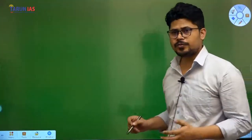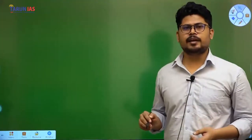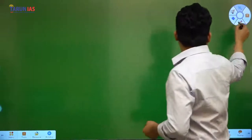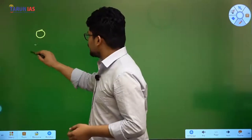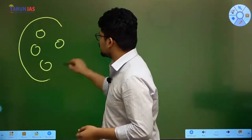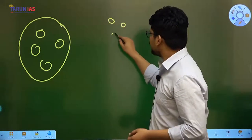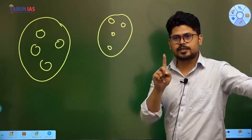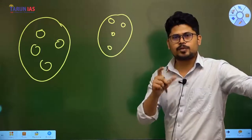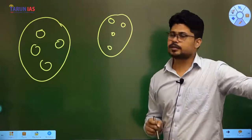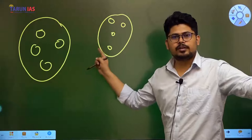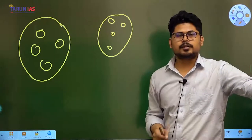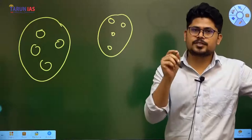In cluster development, similar kinds of entities are grouped into one cluster. This makes two things easy: first, differentiation, and second, group-making of similar things. By differentiation, we can assess what kind of different strategies are needed for different things, avoiding the danger of a 'one size fits all' approach.